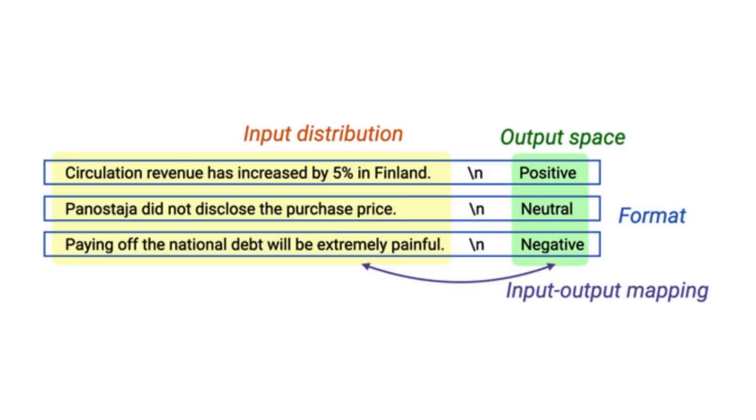A prompt that leveraged in-context learning will have the following four elements: an input distribution, a distribution of output, both of which are mapped together in an input-output mapping, and finally, a format in which the in-context learning prompt is presented. Each of these elements play a role in the in-context learning performance of a model.